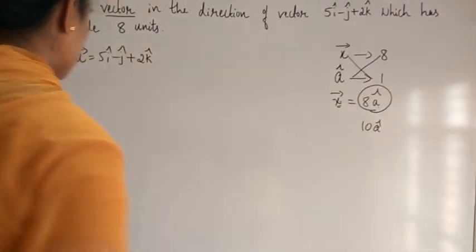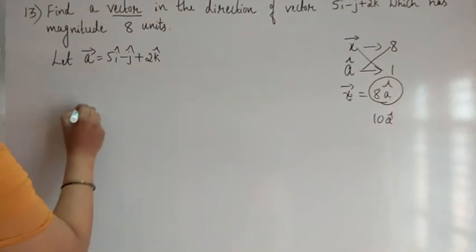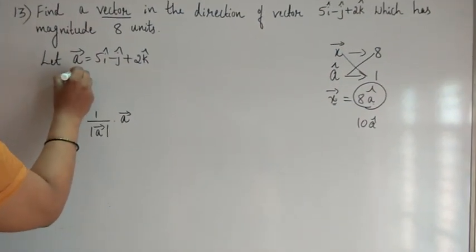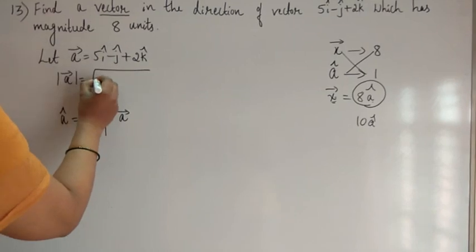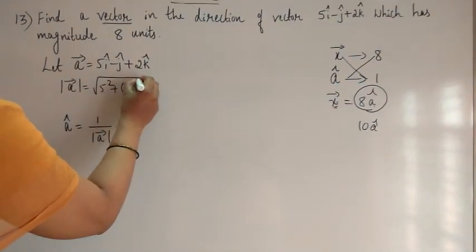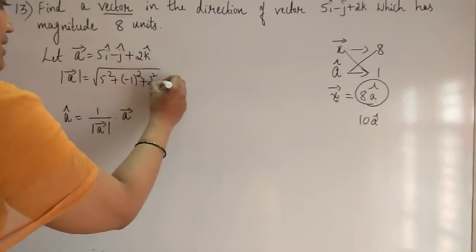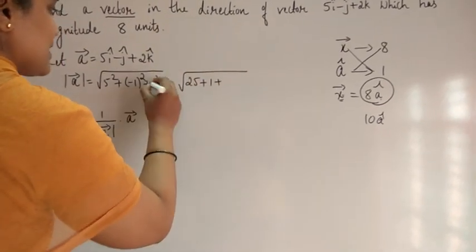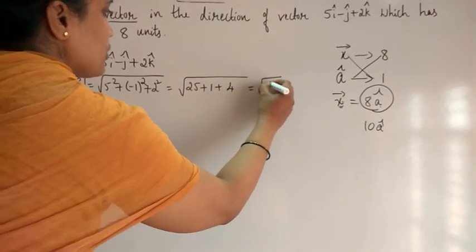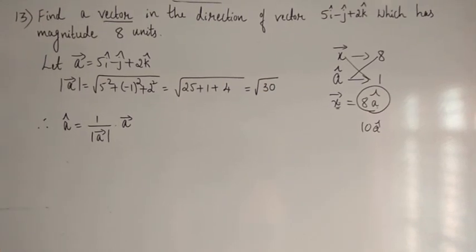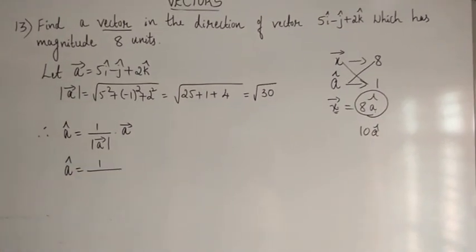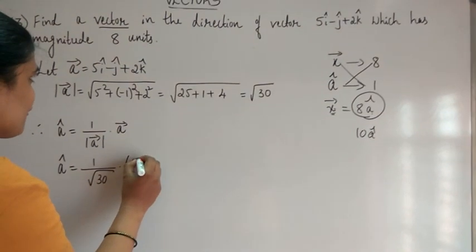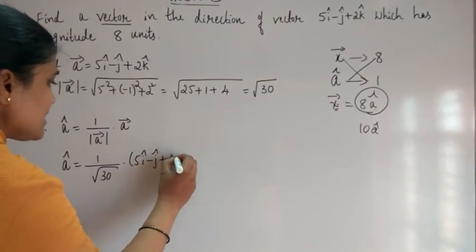First find A-cap. The formula is: A-cap equals 1 by magnitude of vector A, into vector A. Magnitude of vector A equals square root of 5-square plus (minus 1)-square plus 2-square, which equals root 30. Therefore A-cap equals 1 by root 30, into (5i-cap minus j-cap plus 2k-cap).